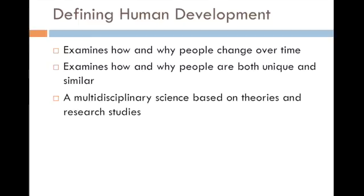Why do babies in other cultures sometimes not walk until as late as 24 months of age, and does that have any long-lasting effects on their motor development? Human development is a multidisciplinary science that has only evolved in the last 50 or so years. Before that, it was a disparate set of various sciences — people were studying development in biology, ethology, and psychology. Freud proposed multiple theories about how humans develop early in life, and it was all those fields coalescing around change over time that really led to defining human development as a separate field.